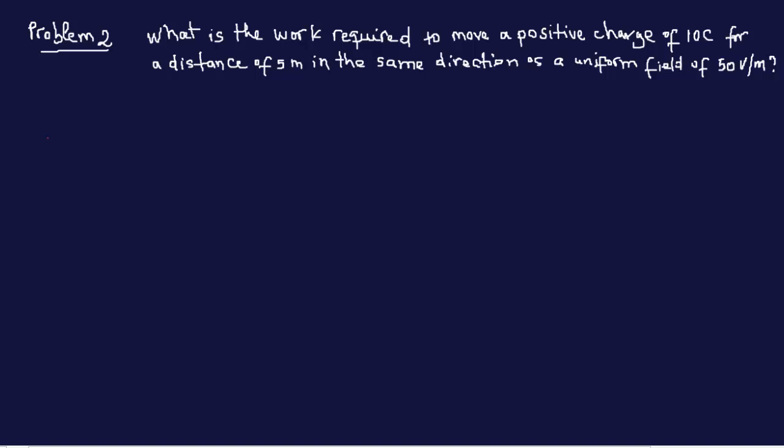Next problem. The question here is, what is the work required to move a positive charge of 10 coulombs for a distance of 5 meters in the same direction as a uniform field of 50 volt per meter? Going back to the book on the first page of page 193, the question is asking for work, so W.